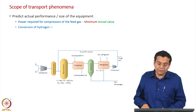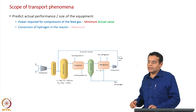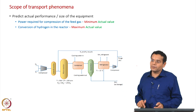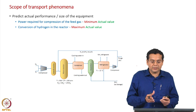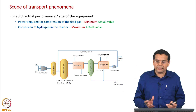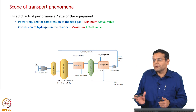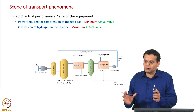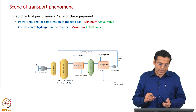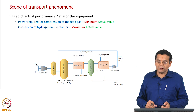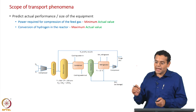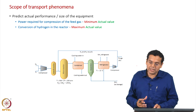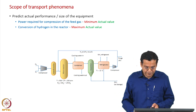Similarly, the conversion of hydrogen in the reactor — we found out the maximum value, either based on the assumption that gases behave ideally or non-ideally, but it still gives a maximum value only. Using a transfer phenomena approach, you can find out the actual value of conversion based on the size of the reactor.